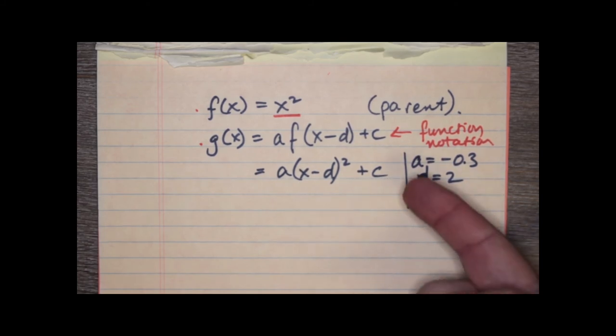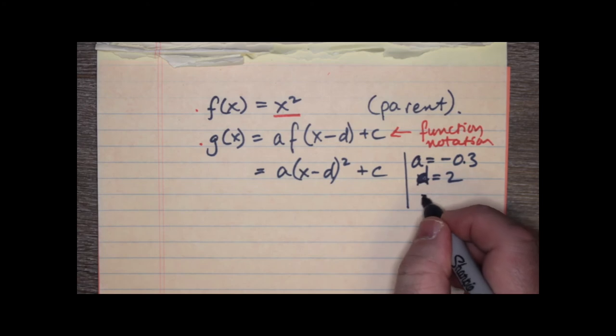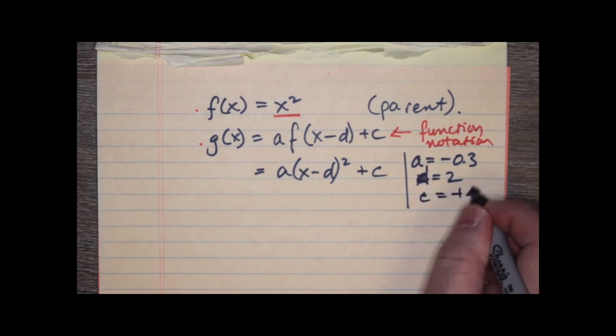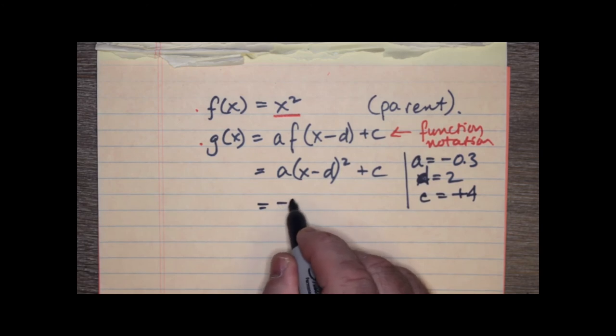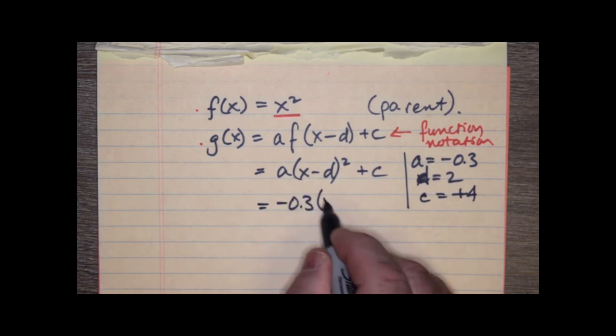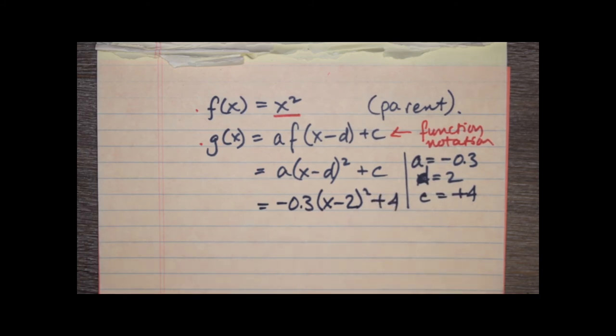And this c here was a translation of 4 units up. So, then c was plus 4, positive 4. So then, we have negative 0.3, x minus 2 squared, plus 4. Now, what is this function?